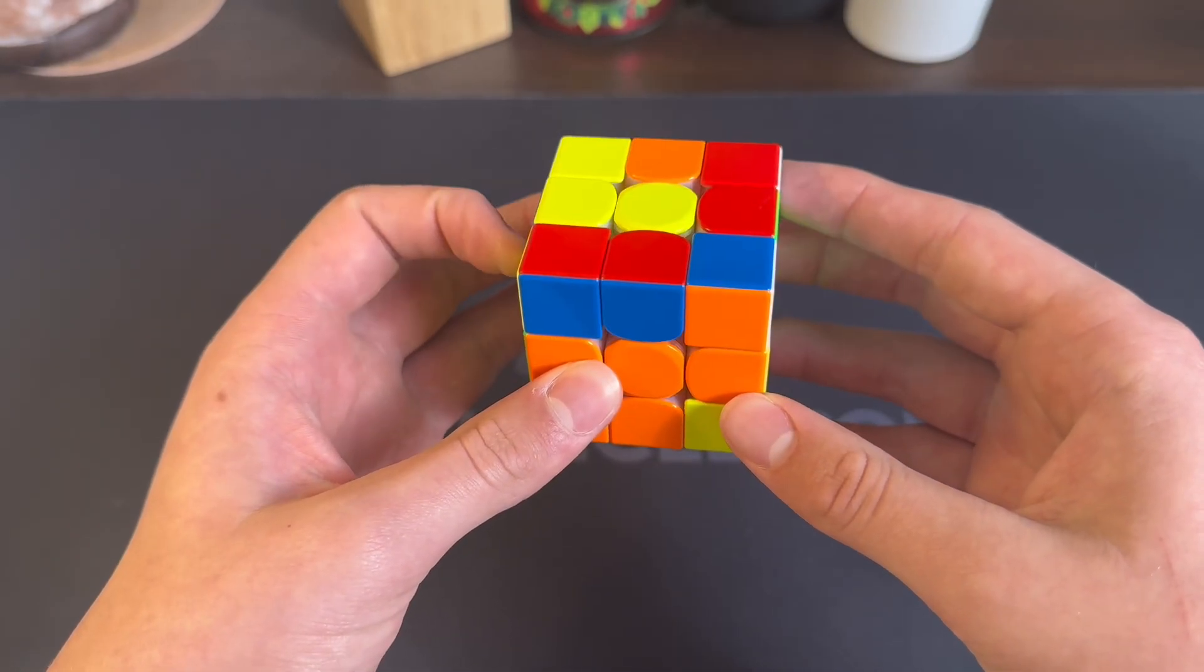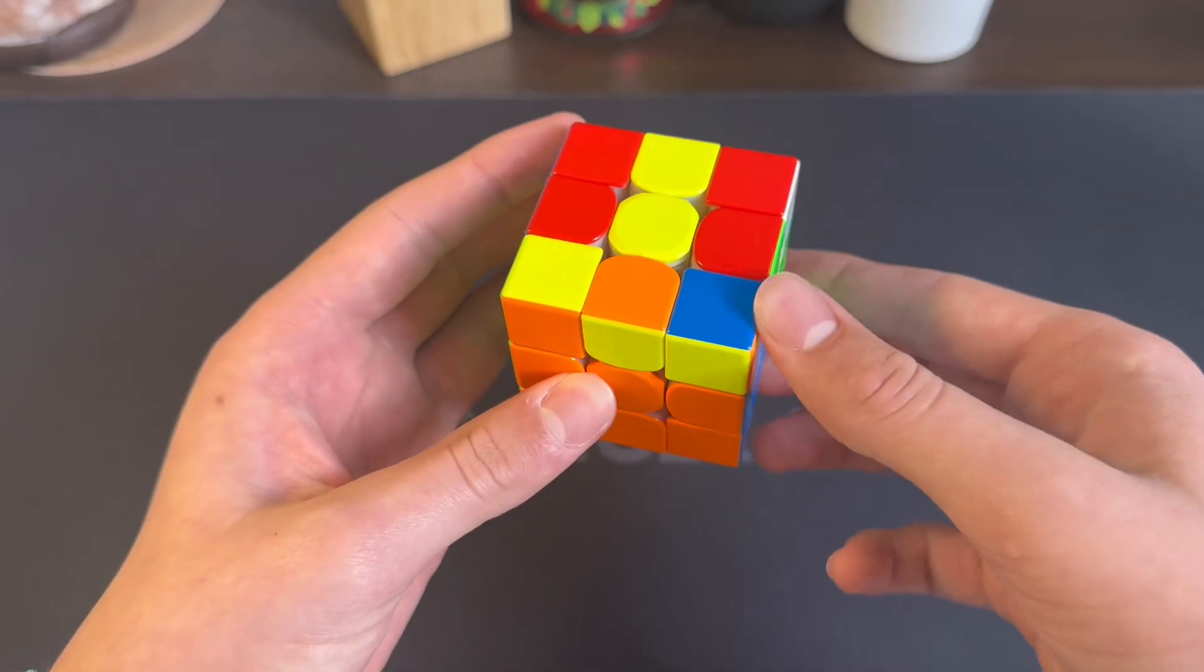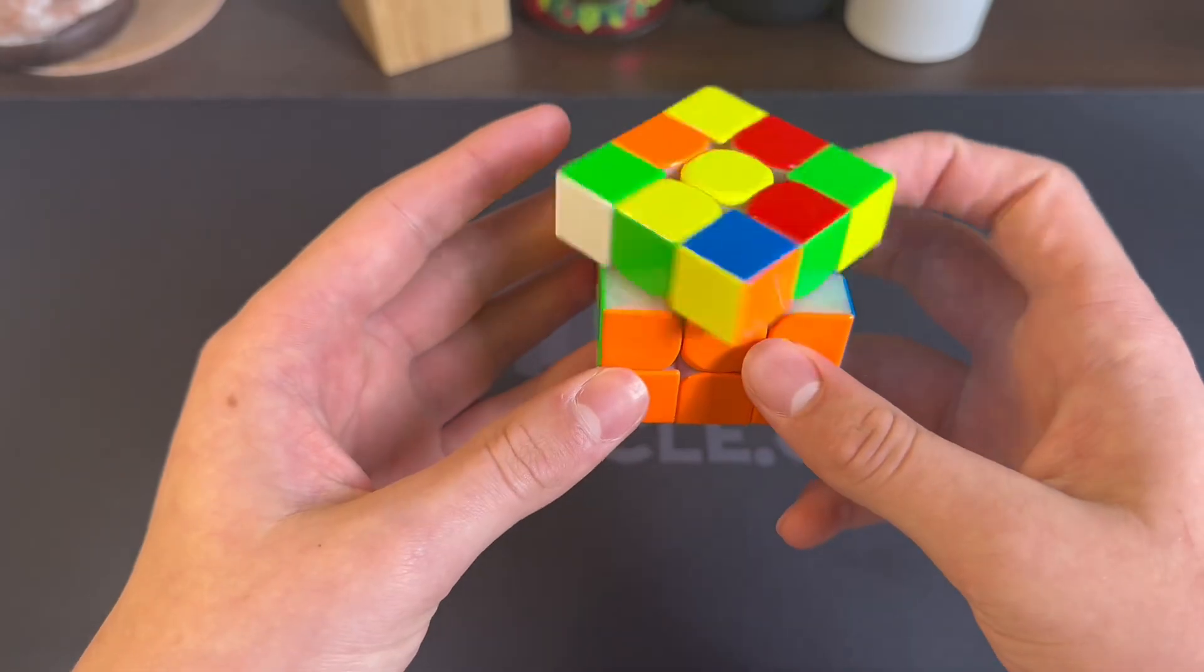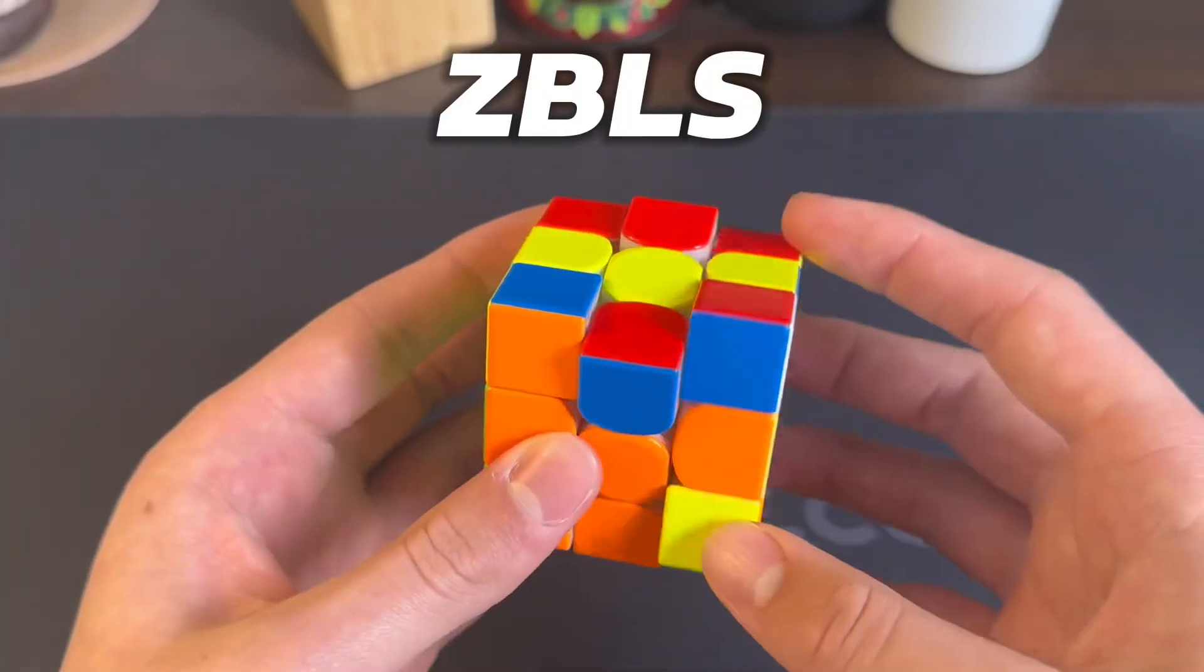And then you got this for third pair right here. So U prime, insert it, and now cancel into this third pair, pairing it up and insert it into the back. For ZBLS you just have a split case. You could insert it like this, but of course we're doing ZBLS.